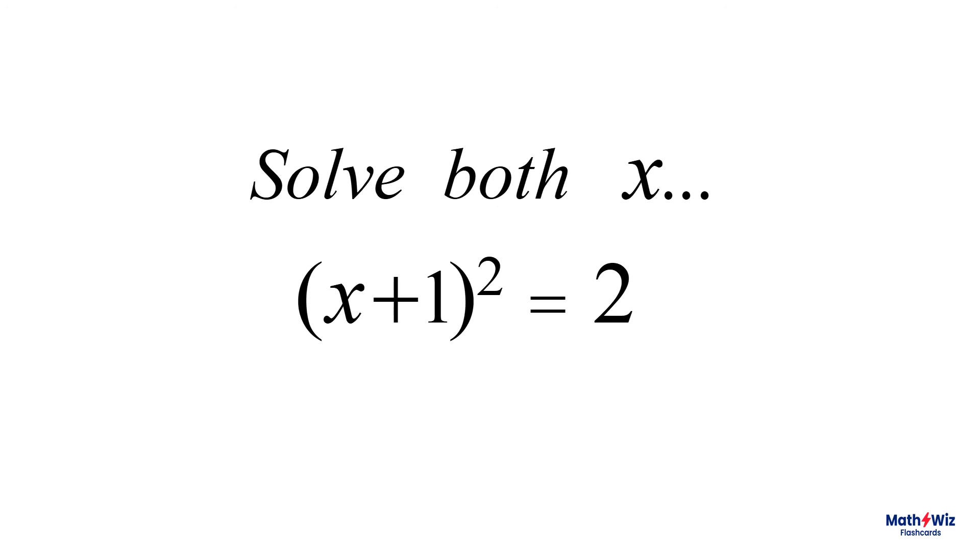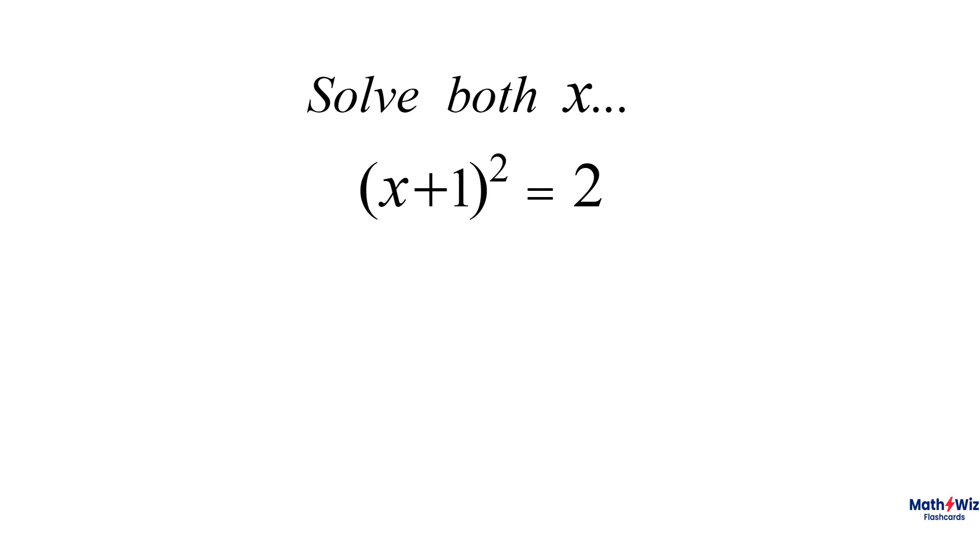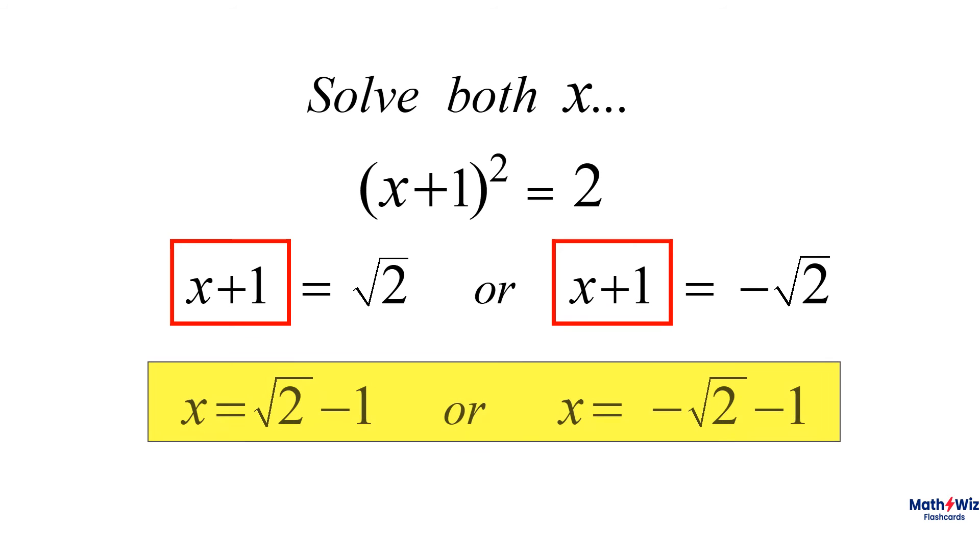Our third example is slightly more complicated. Quantity squared equals 2. Therefore, quantity x plus 1 equals square root of 2, or negative square root of 2. So x equals square root of 2 minus 1, or negative square root of 2 minus 1.